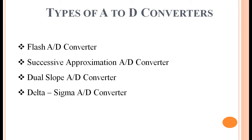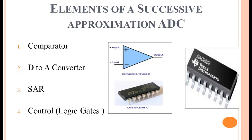As we have already gone through the flash type of ADC in the last video, we will be continuing with the successive approximation A to D converter in this video. The different elements of successive approximation ADC include a comparator, a digital to analog converter, a successive approximation register, and control.